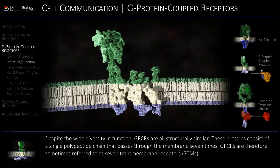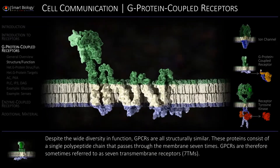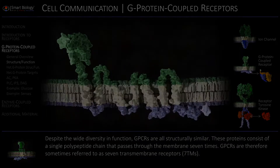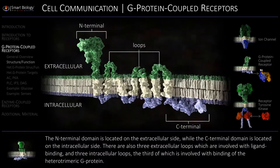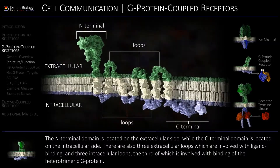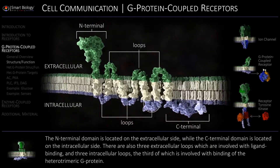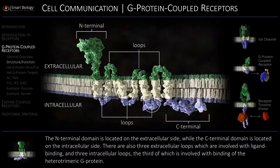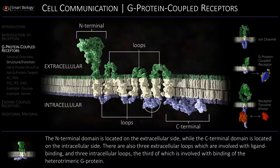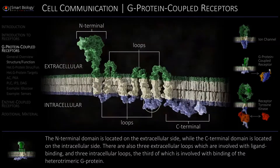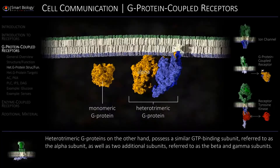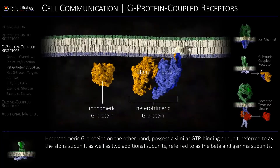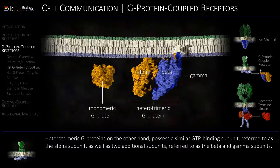GPCRs are all structurally similar, with three intracellular loops, the third of which is involved with binding of the heterotrimeric G-protein, referred to as the beta and gamma subunits.